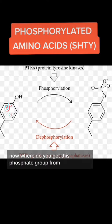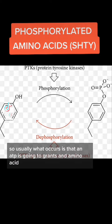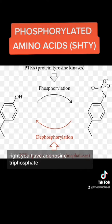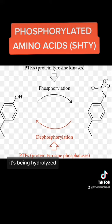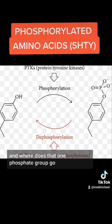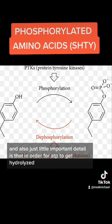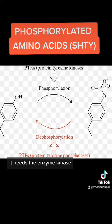Now, where do you get this phosphate group from? Usually what occurs is that ATP is going to grant an amino acid a phosphate group when ATP is being hydrolyzed. So that ATP is being split up — you have adenosine triphosphate being hydrolyzed, it turns into adenosine diphosphate, and that one phosphate group is going to smash into that amino acid and it's going to become phosphorylated. Also, an important detail is that in order for ATP to get hydrolyzed, it needs the enzyme kinase.